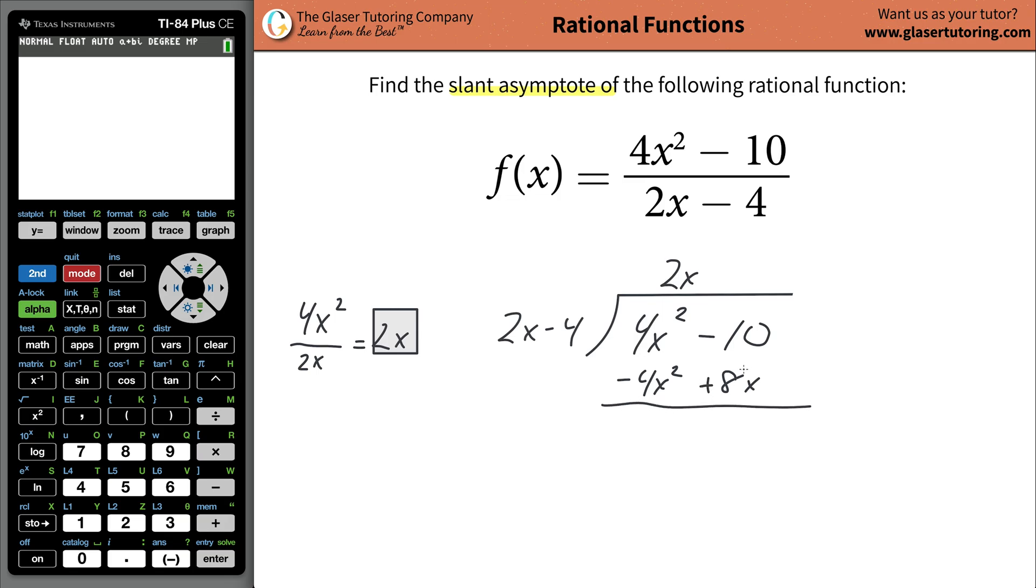Now you're going to take this negative sign and distribute it to each of those terms, so the 4x squared becomes negative and the 8x becomes positive. Then perform the operations that are indicated. You can combine these like terms, and when you combine them, they just go bye-bye. Now you cannot combine these two terms. What you're left with is 8x minus 10.